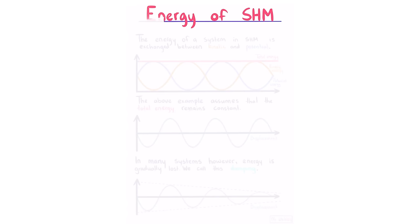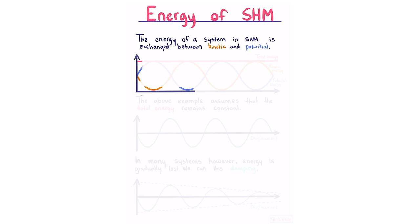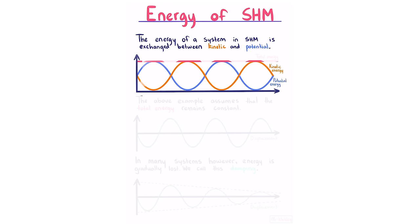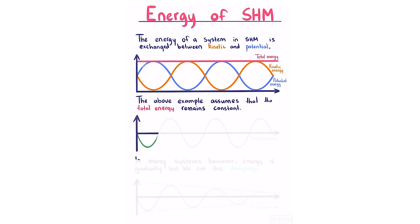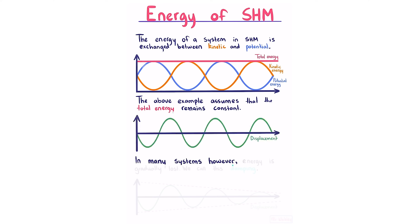Energy of SHM. The energy of a system in SHM is exchanged between kinetic and potential energy such that the total energy remains constant — kinetic and potential are mirror images of each other. In many systems, however, energy is gradually lost. We call this damping.